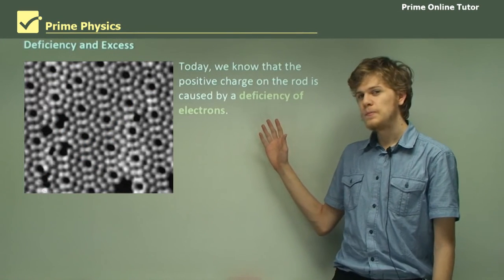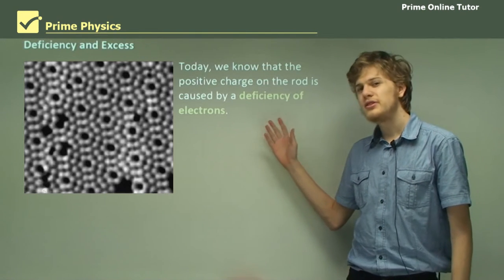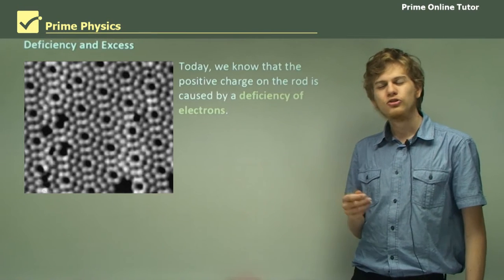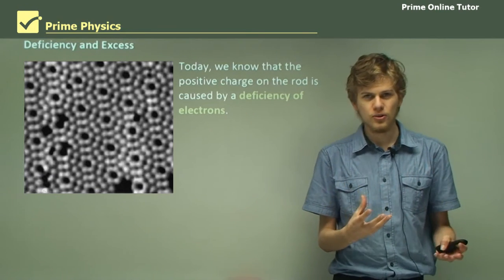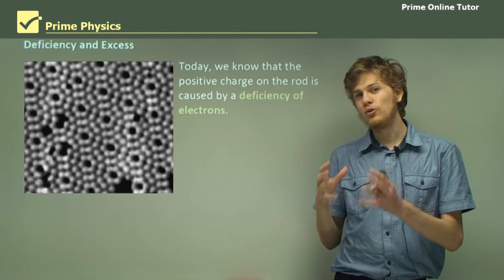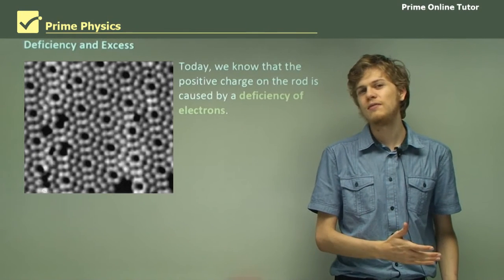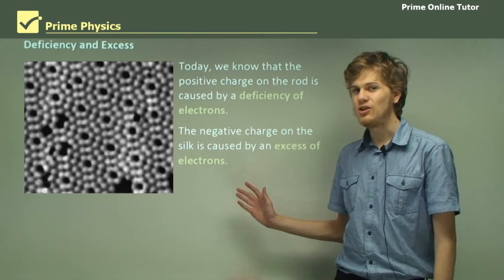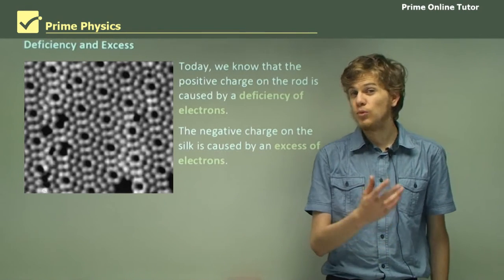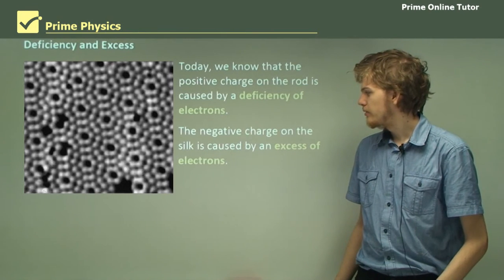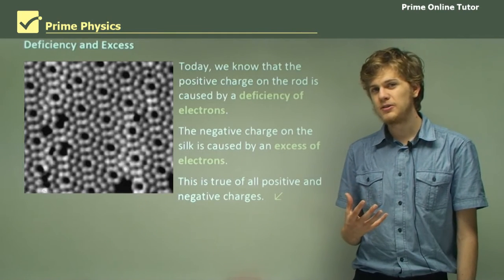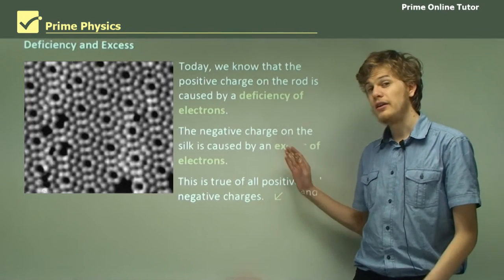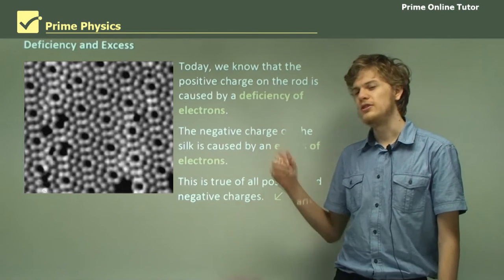Today we know that the positive charge on the glass rod is caused because it is missing electrons. The protons in an object tend not to move — they stay put. It's the electrons that move around. So when we have a positive charge, it's not caused by gaining protons; it's caused by losing electrons, because that means we have more protons that haven't moved than electrons. Conversely, the negative charge on the silk is caused by an excess of electrons — it has gained a whole bunch of electrons, so it has more electrons than the protons it started off with. This is true of all positive and negative charges: the reason for a charge is either an excess of electrons for a negative charge, or a deficiency of electrons for a positive charge.